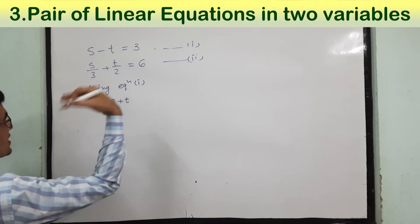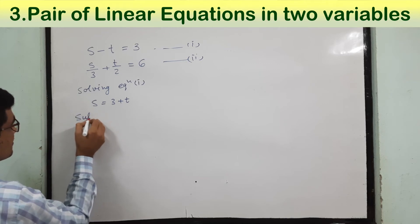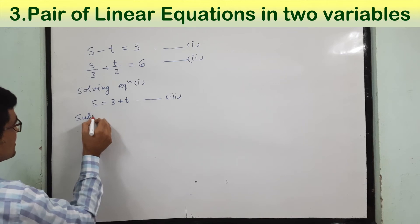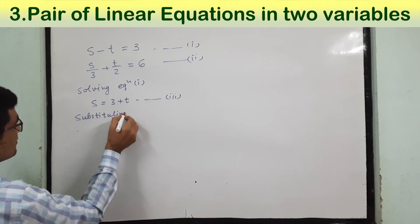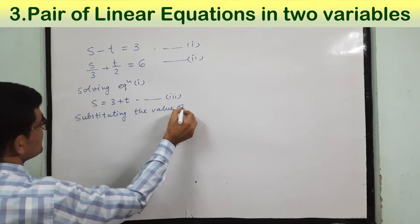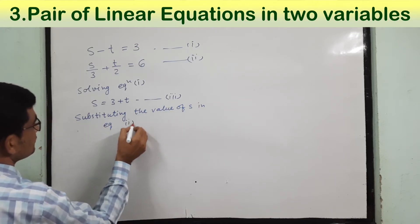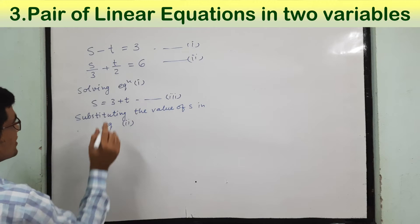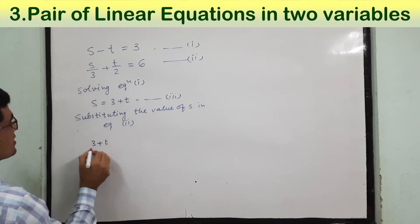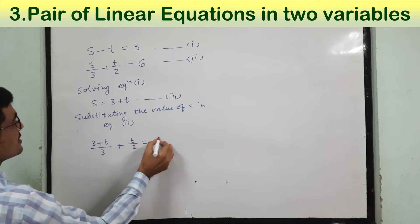Now we put this value into equation number 2 — this step is called substituting. Substituting the value of s in equation 2: instead of s, we write 3 plus t, so we get (3 plus t) whole divided by 3, plus t by 2, is equal to 6.